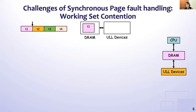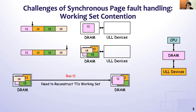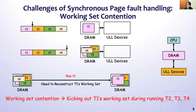Let me give a quick example to show the cause of working set contention. Assuming there are four processes T1 to T4 running on a system using synchronous page fault handling, T1's working set will be read to DRAM while running T1. After T1 finishes, working sets belonging to T2, T3, and T4 are read to DRAM during their executions. When T1 is scheduled to run again, the system may spend lots of time reconstructing T1's working set, because it was kicked out while running T2, T3, and T4. This issue is called working set contention.